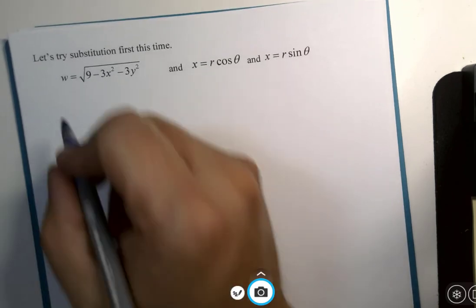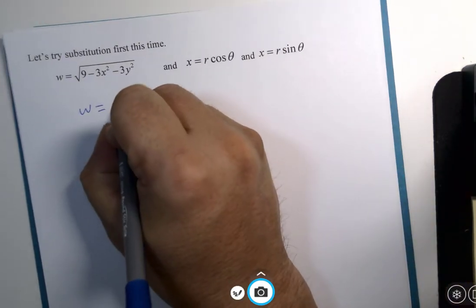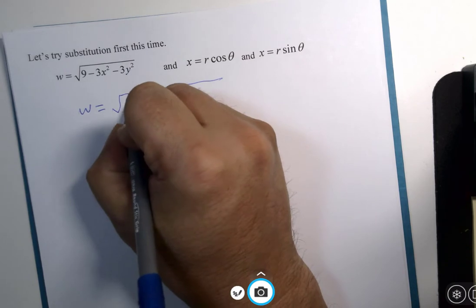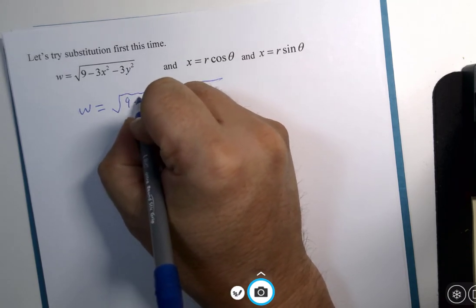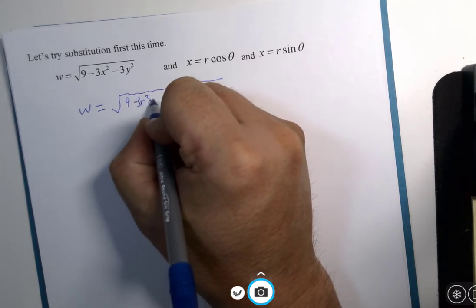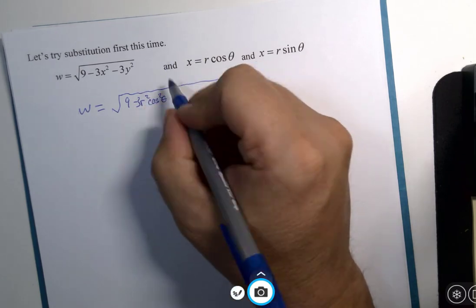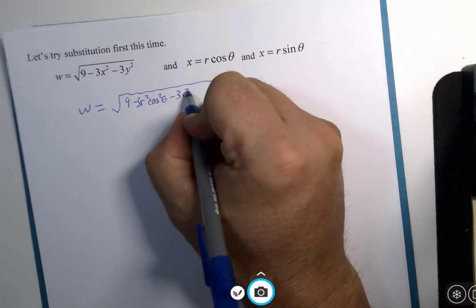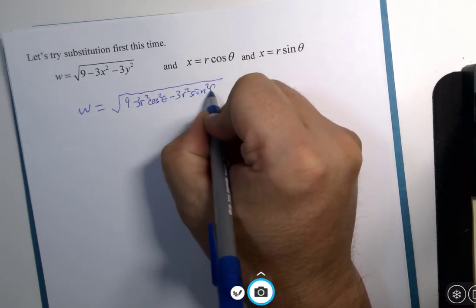So w equals nine minus three r squared cosine squared theta minus three r squared sine squared theta.